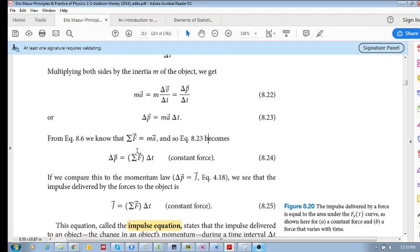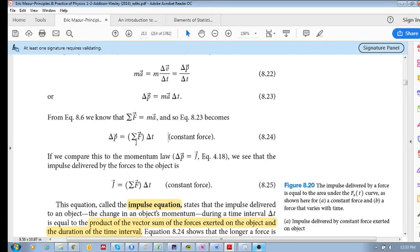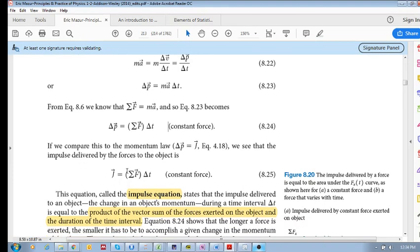Okay, so what does this mean? Your momentum changes as the vector sum of your forces gets applied over a certain time period. And this delta P is your impulse. So impulse, this is the impulse equation. Your impulse is force times time, basically. Sum of the forces times delta T.